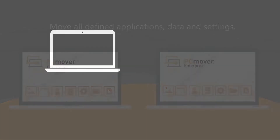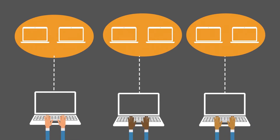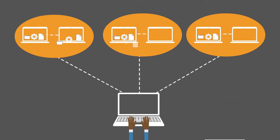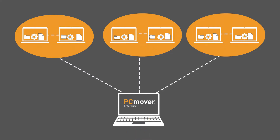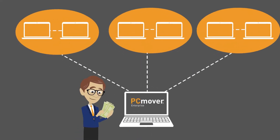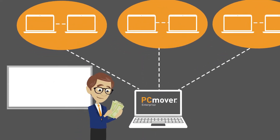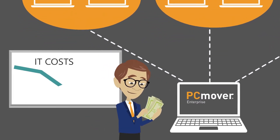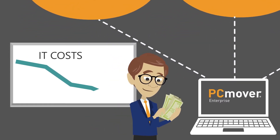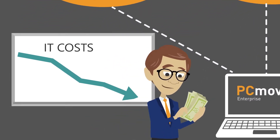PC Mover Enterprise software cuts the cost of PC refreshes by reducing IT labor for data migration between endpoints, with automated low-touch or zero-touch configurations. In fact, organizations using PC Mover average a savings of over $300 on every PC they replace.